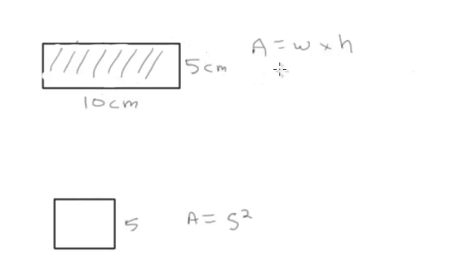So I'm going to do area is equal to width times height. So that's going to be 10 centimeters times 5 centimeters. So what's 10 times 5? That's 50. And then what's centimeter times centimeter? Centimeter squared. So the area is equal to 50 centimeters squared.